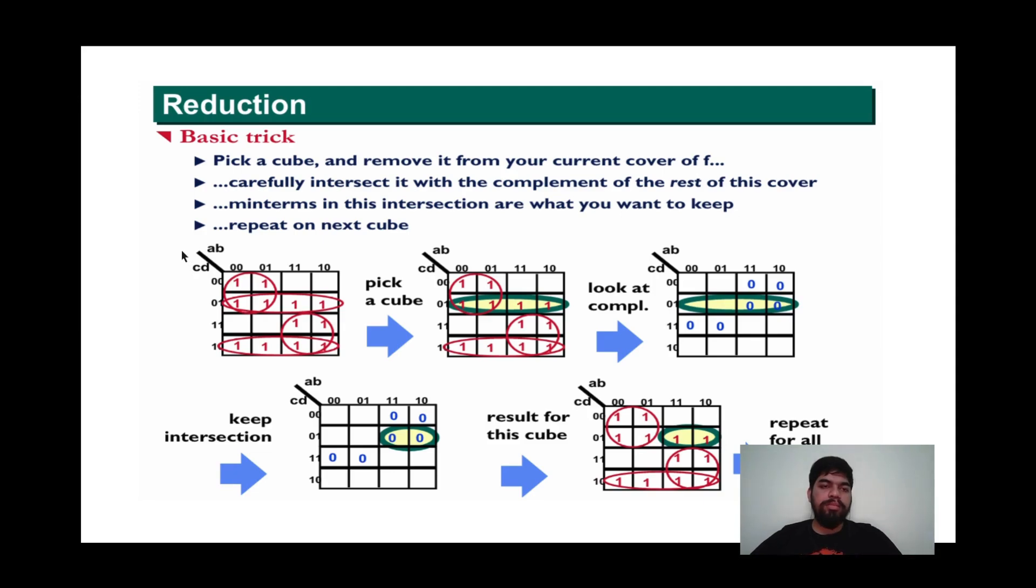We can understand reduction by the given figure. In the given figure, we can see that we selected this cube and we have taken the complement with the rest of the cover. In the next step, we take the intersection of the selected cube and the complement. Then the highlighted part shows the intersection. In the next step, result for the cube, we can see this. Comparing the first diagram and the last diagram, we can see there is a redundant part here. There we can see that with the help of reduction, the redundant part is gone.